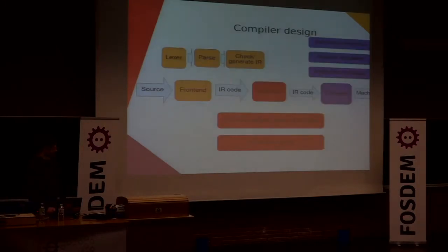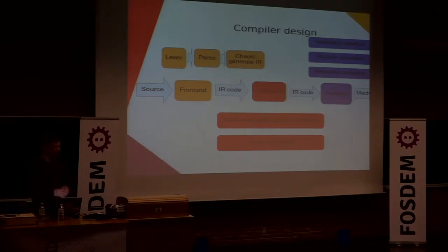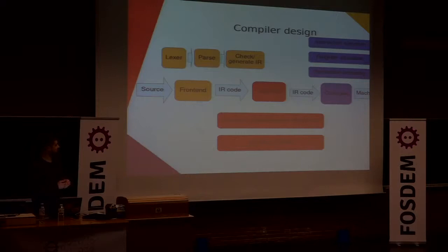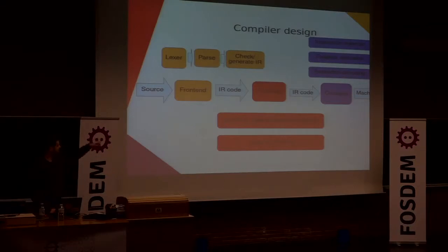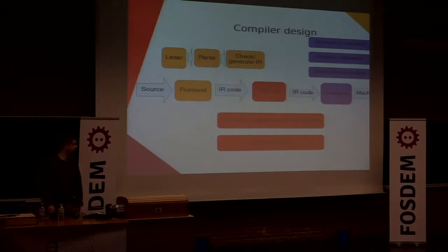So maybe a little bit about how does a compiler work — a high-level overview. A compiler basically takes source code and translates it into machine code or some other code. First you have some checking of the source code itself, called lexing and parsing. Then from there, IR code is generated, which means intermediate code. This intermediate code can be optimized with all kinds of clever tricks, and then in the end code is generated for a specific processor.